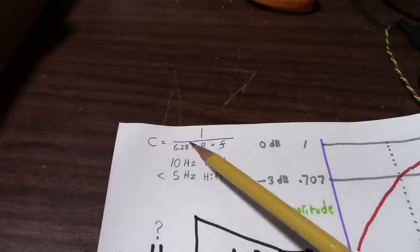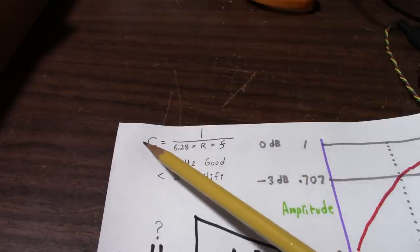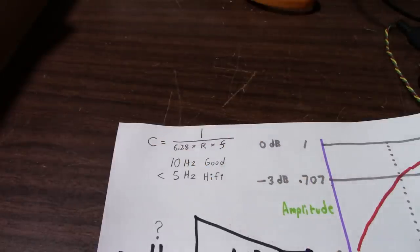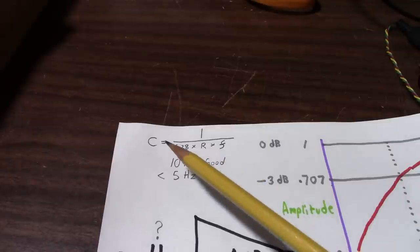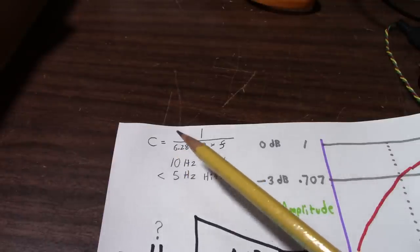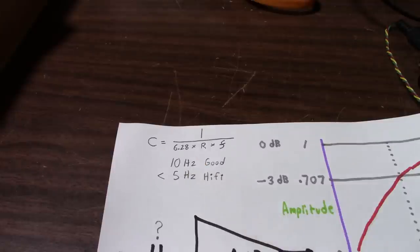Here I rearranged the formula to calculate for C, or capacitance. And 6.28 is the value of 2 pi. And we're not putting a man in orbit, so three digits is good enough.